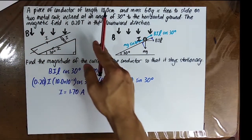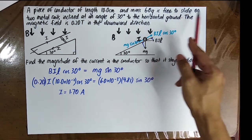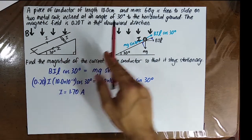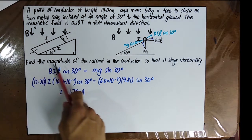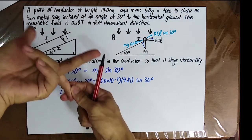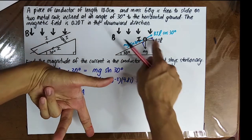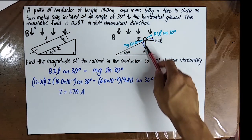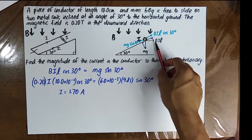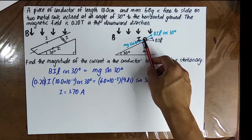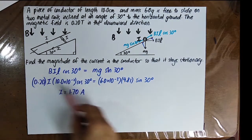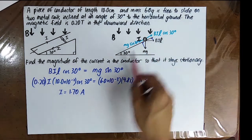Example: A conductor of length 10 cm and mass 6 g can slide on two metal rails inclined at 30° to the horizontal. The magnetic field is 0.2 T directed downward. Find the magnitude of current so the conductor remains stationary. Using Fleming's Left Hand Rule with B downward and I in the given direction, find the direction of the magnetic force. Then resolve both the gravitational force and the magnetic force along the inclined plane, and set the components equal so there is no resultant force on the conductor.